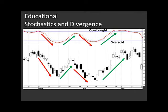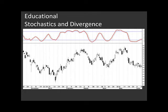Anything below 20 is considered oversold and anything above 80 is considered overbought. You could buy stocks when they're oversold or sell them when they're overbought, but that's very simplistic and not what I'm looking to hone in on here today. What I am looking to hone in on is the divergence. I explained it at the beginning of the show but we're going to unpack it a little bit more now with another BHP Billiton chart showing a couple of examples.